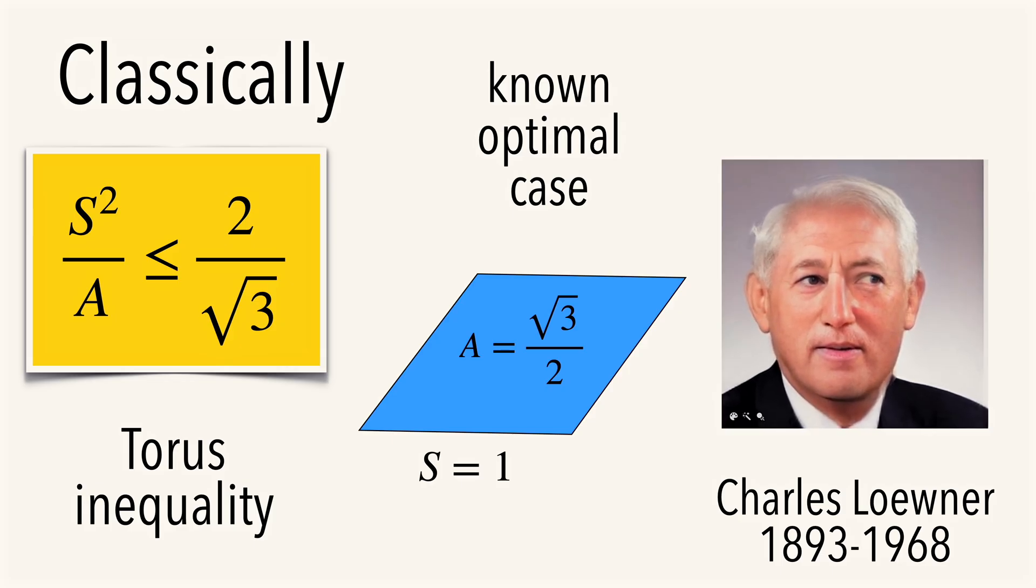Classically, for the torus, Charles Loewner has shown that s squared over a is always smaller or equal than 2 over square root of 3, with the optimal case known.